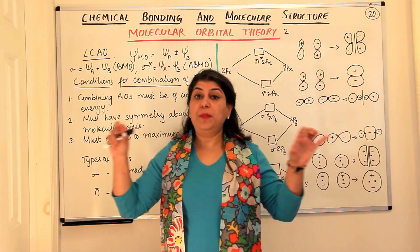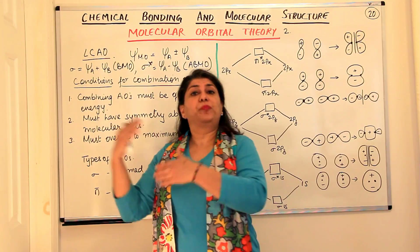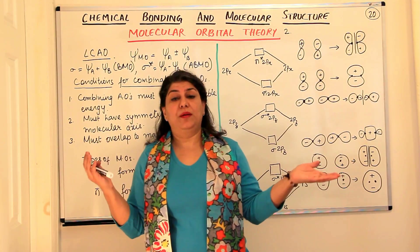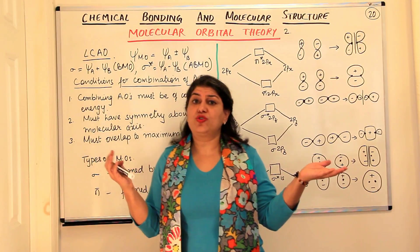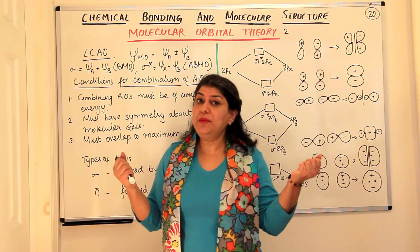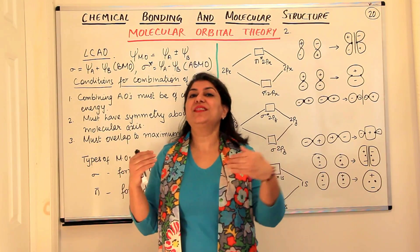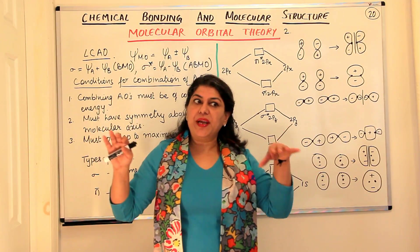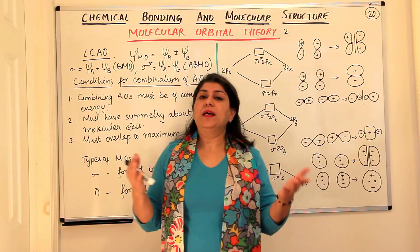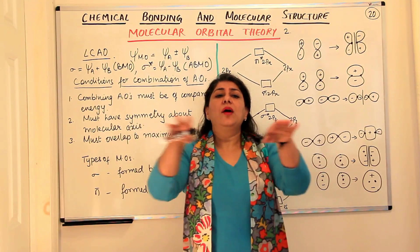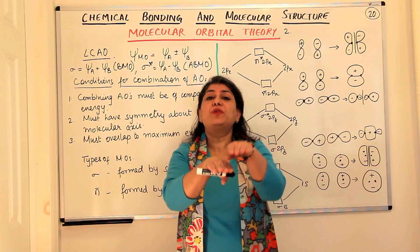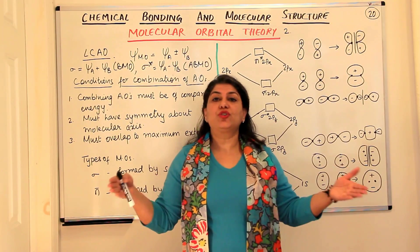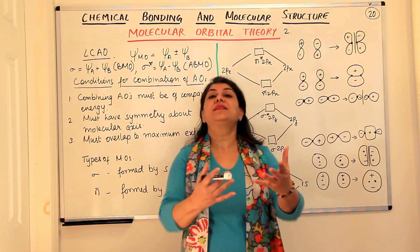The reason is that not only should their energy be equal—all three p orbitals are degenerate—so px should be able to combine with py and with pz also, but that does not happen. The reason being that their orientation is different. So not only should their energies be the same, their orientation should also be the same. Overlapping of orbitals is only possible if they are in the same direction.